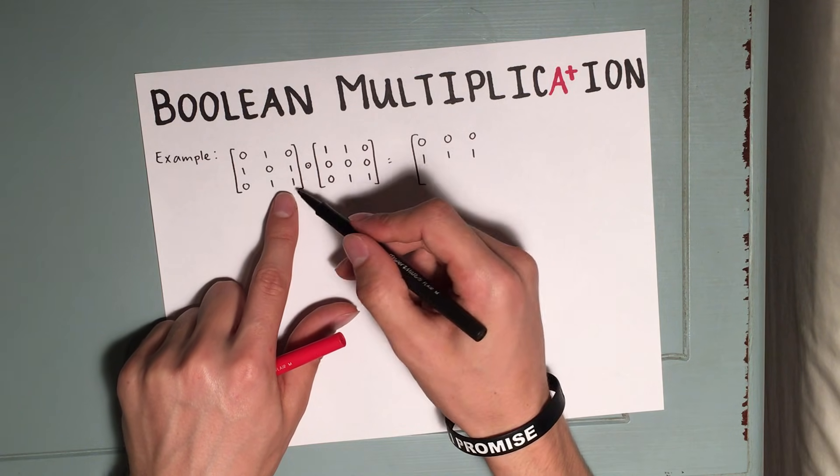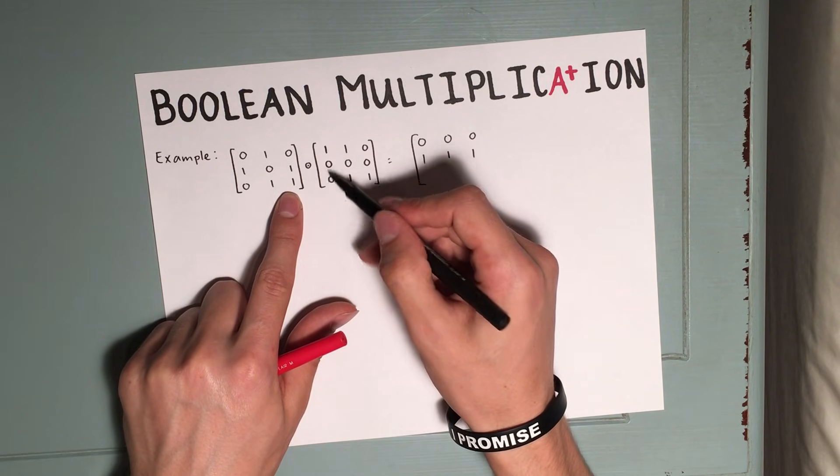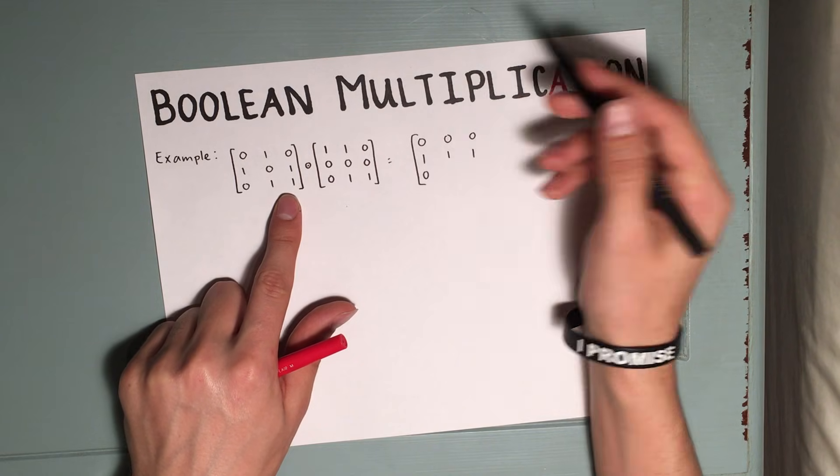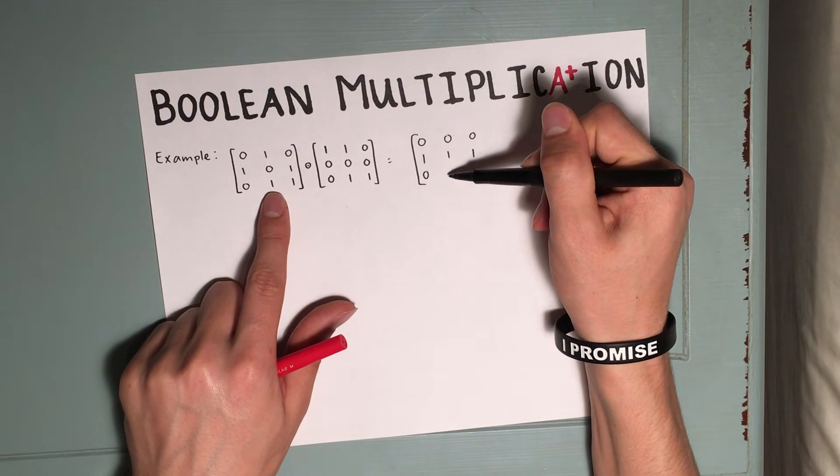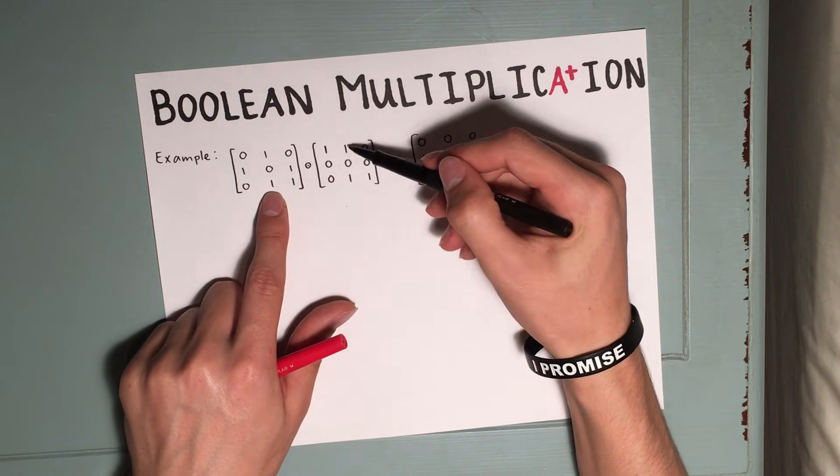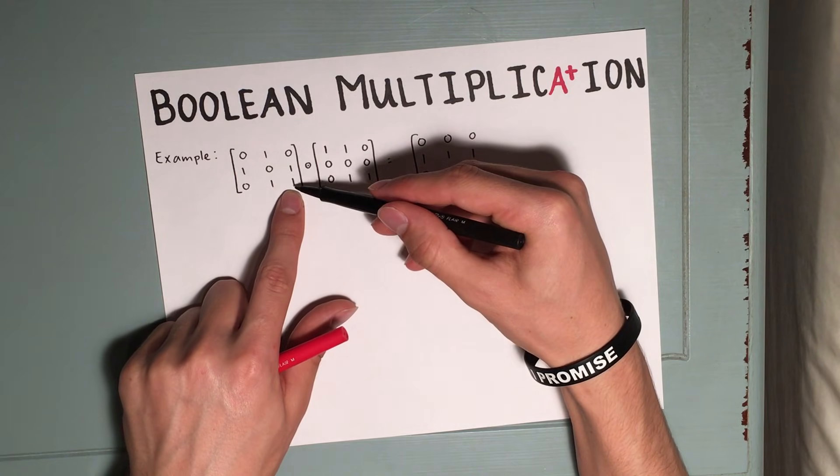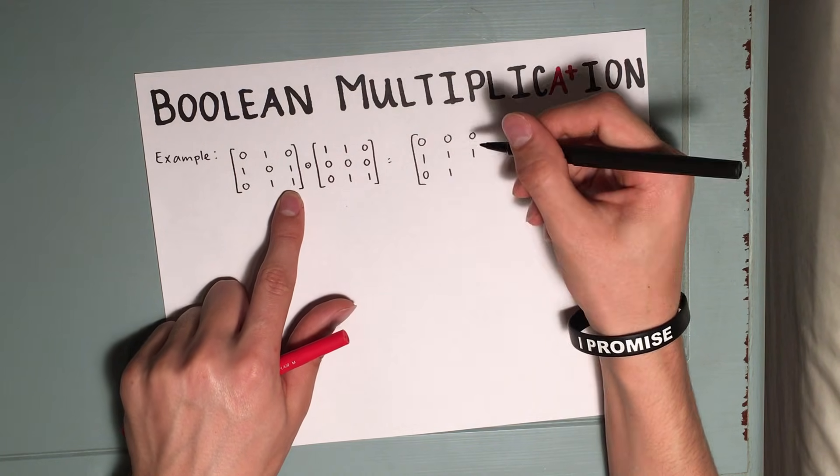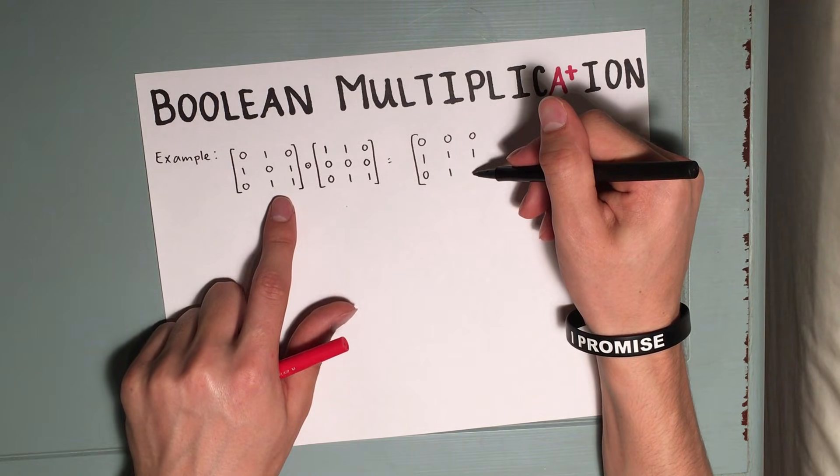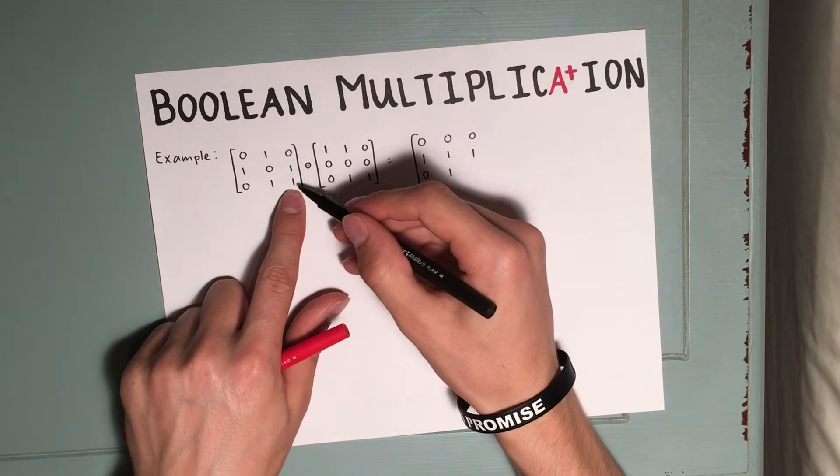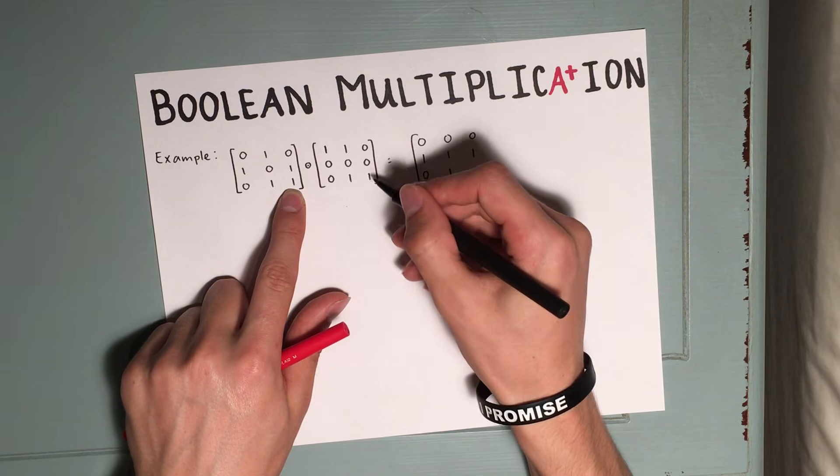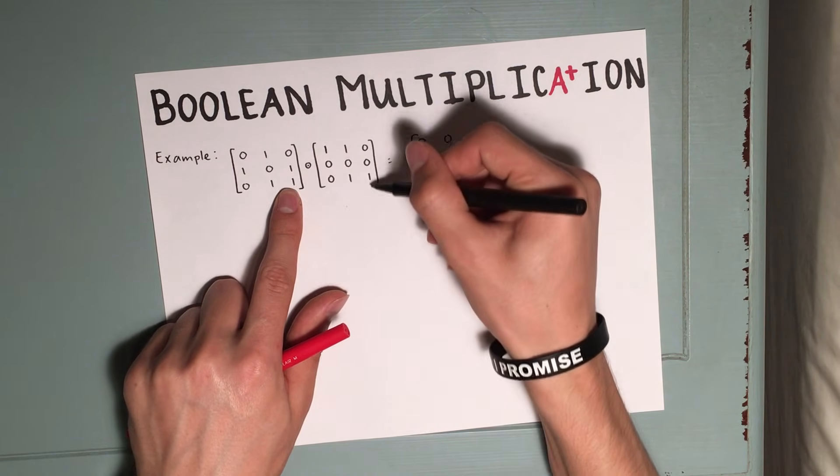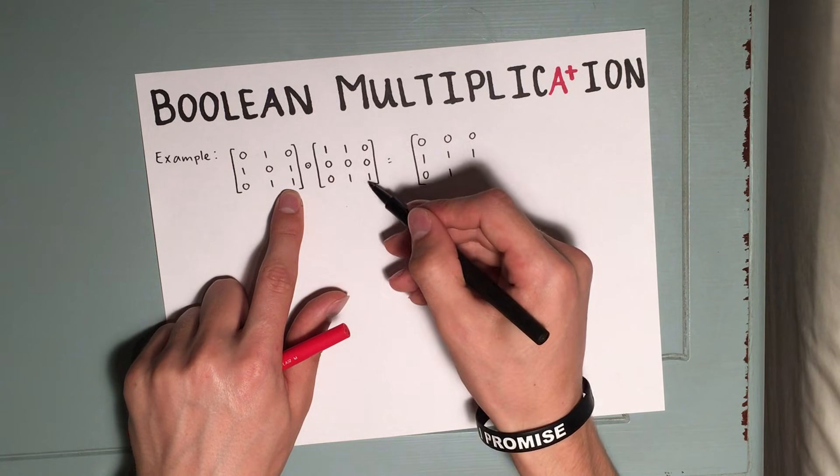So we have only ones in the second and third position, and only zeros in the corresponding positions over here, which means that we're left with a zero. For the second position, we have a one in the third position of the third row, and a third position of the second column. That gives us a one. For the final entry, the third row, third column, we note that we do have a one in the third position here, and we do have a one in the third position here. So again, that's the third row, third column, third position, third position.